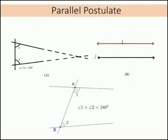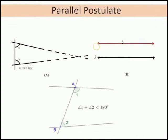Now we have parallel postulate A, B, and C. Parallel postulate A shows the interior angles — angle A and angle B — where their sum is less than 180 degrees, so the lines will meet on that side. Parallel postulate B shows parallel lines, which are lines that never intersect or never meet. Even if we extend the two lines, they will not meet since they are parallel.